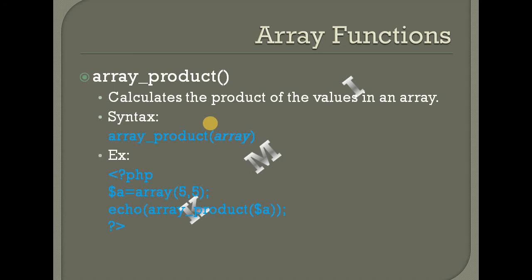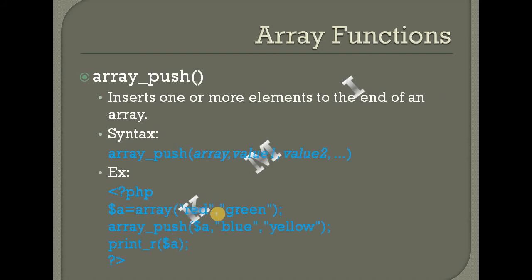Array_product — calculate the product of the values in an array. The product is calculated. If the product is 5 and 5, then the product is 5 into 5.